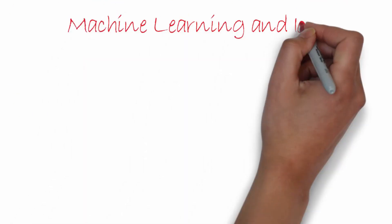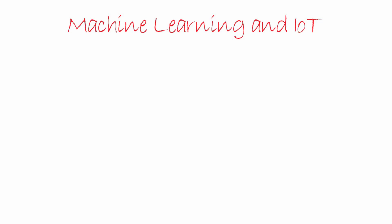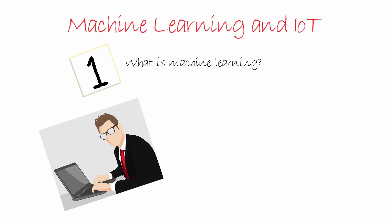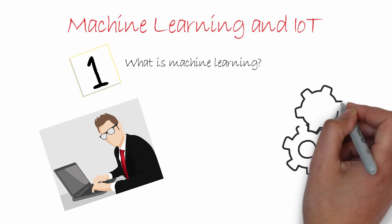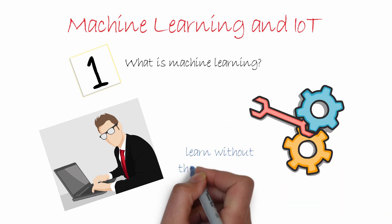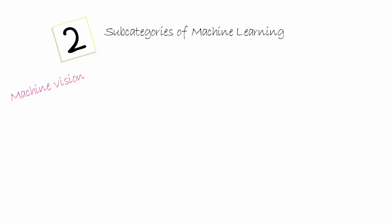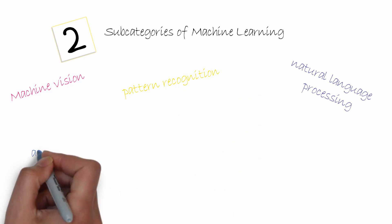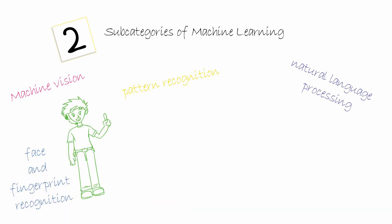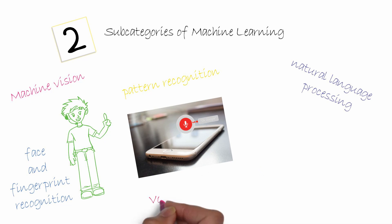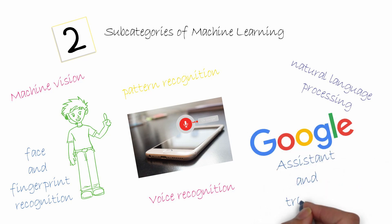The fourth technological pillar of IoT is machine learning. Machine learning is a subcategory of computer engineering where algorithms are used to train the machine to learn without the intervention of a programmer. It has several subcategories like machine vision, natural language processing, and pattern recognition. Some famous examples we use today include face and fingerprint recognition software in your smartphones, voice recognition like Siri, Google Assistant, and Google Translate.